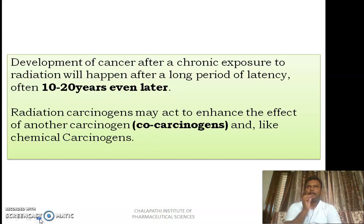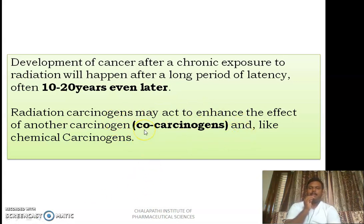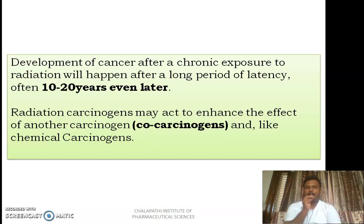It is not possible to develop cancer in an acute manner. Generally it will take 10 to 20 years and even later, upon chronic exposure to UV or IR radiation, to develop those cancers. One more important aspect is co-carcinogens — UV radiation and IR radiation will act as co-carcinogens, meaning they will enhance the effect of another carcinogen such as chemical carcinogens.